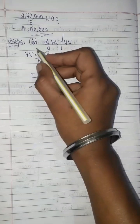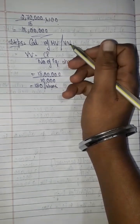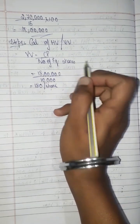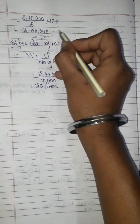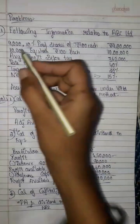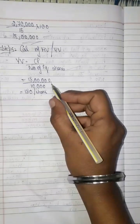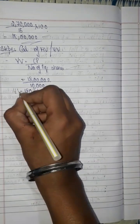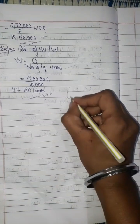Step 5 is calculation of yield value. Yield value equals capitalized profit divided by number of equity shares. The number of equity shares is 10,000. So yield value is 18,00,000 divided by 10,000 equals 180 per share. The yield value is rupees 180 per share. This is a 4-mark question.